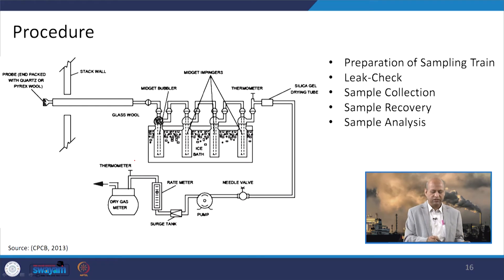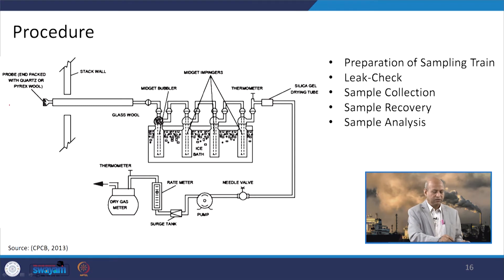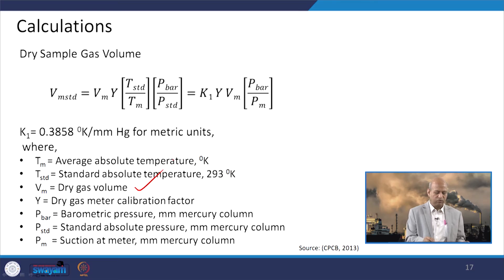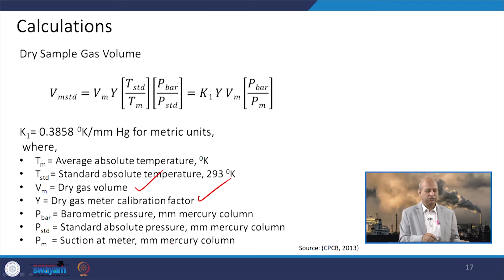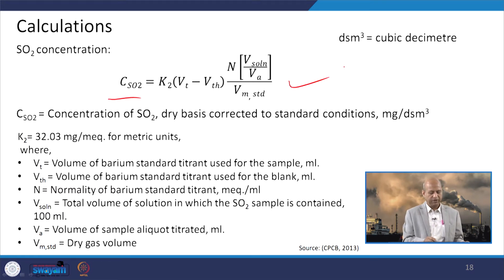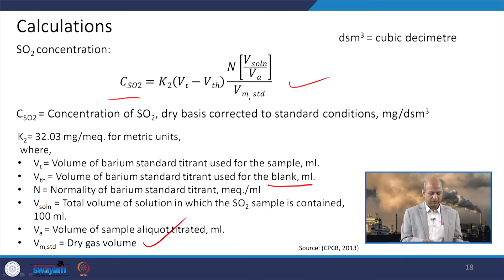The procedure is shown in a schematic diagram: the sample is collected, recovered, and then analyzed in the laboratory. The sample goes through impingers where it is absorbed, and then taken to the lab. Calculations for SO2 are similar to those for particulate matter — temperature, volume, calibration factor, and pressure-related factors are used for gas volume calculation. The SO2 concentration is calculated using the volume of barium standard titrant used for the sample versus the blank, along with the dry volume and volume of the sample.